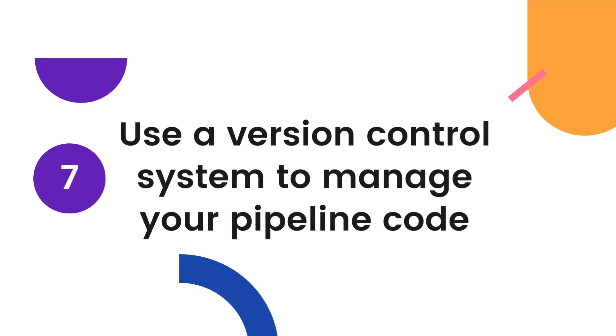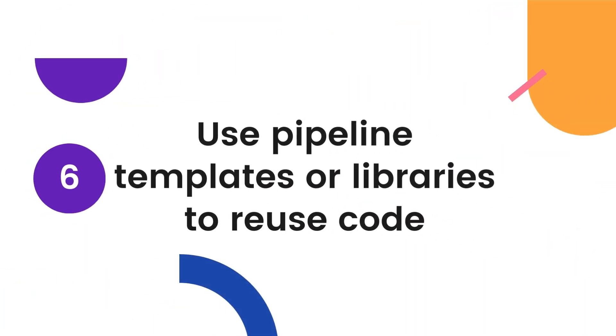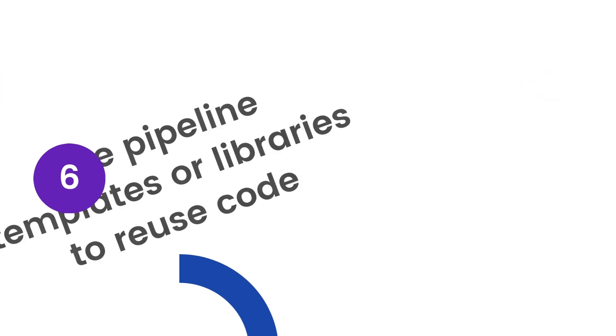Number 6: Create pipeline templates or libraries to reuse common pipeline code across different projects. This helps to standardize your pipeline code and reduces duplication of effort.